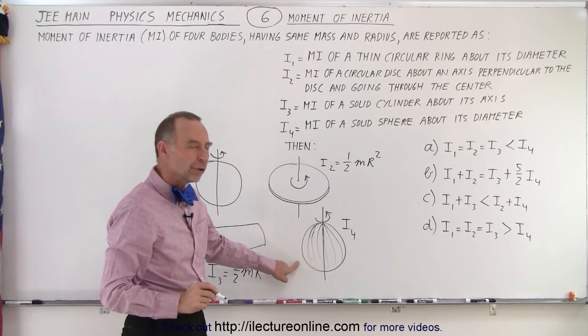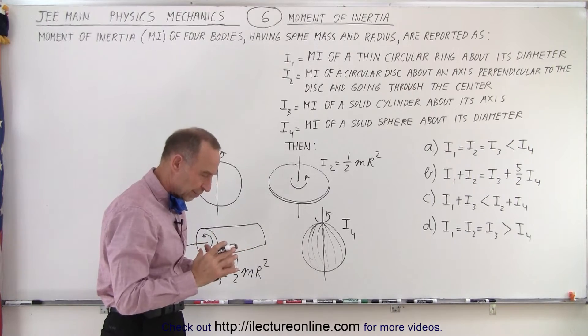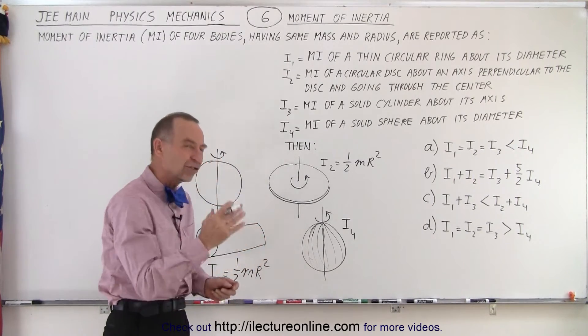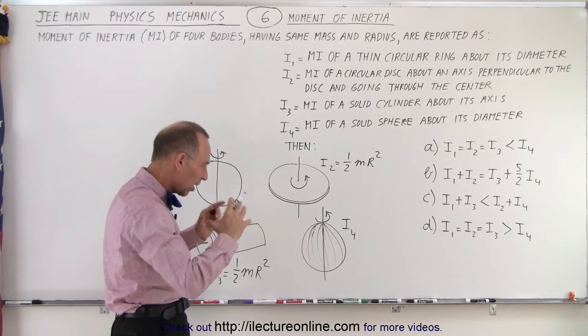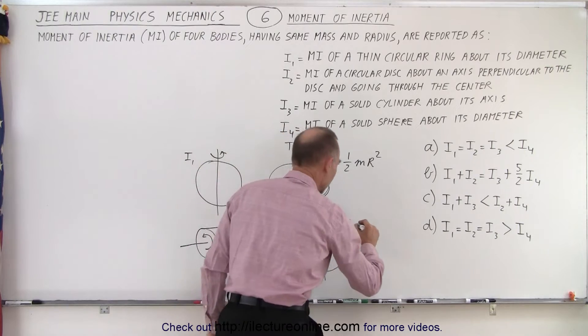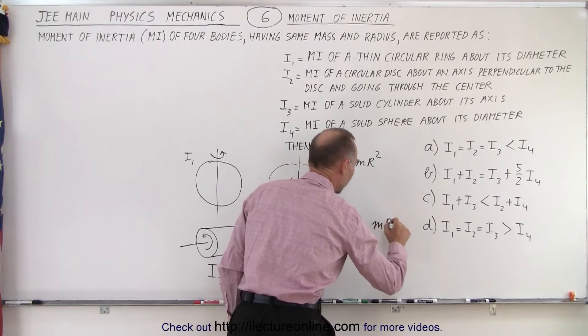And then the moment of inertia of a solid sphere. Now the solid sphere, since the mass is close to the center, rotation is smaller than the moment of inertia of a hollow sphere. And always remember that it's going to be something m r squared.